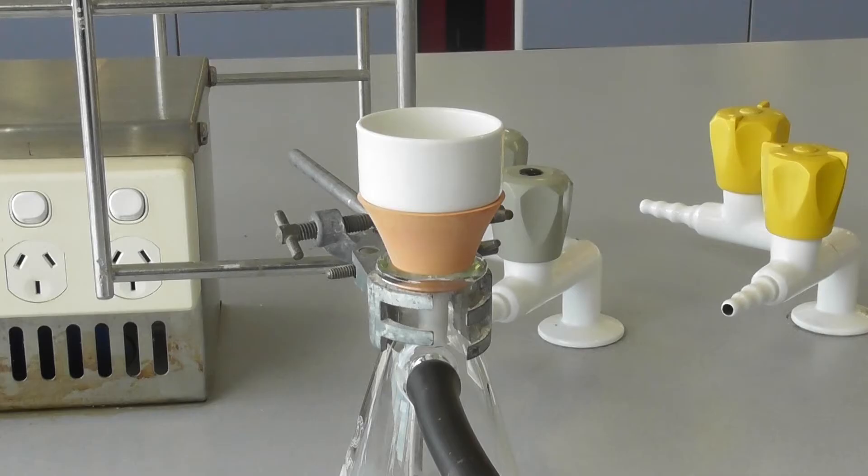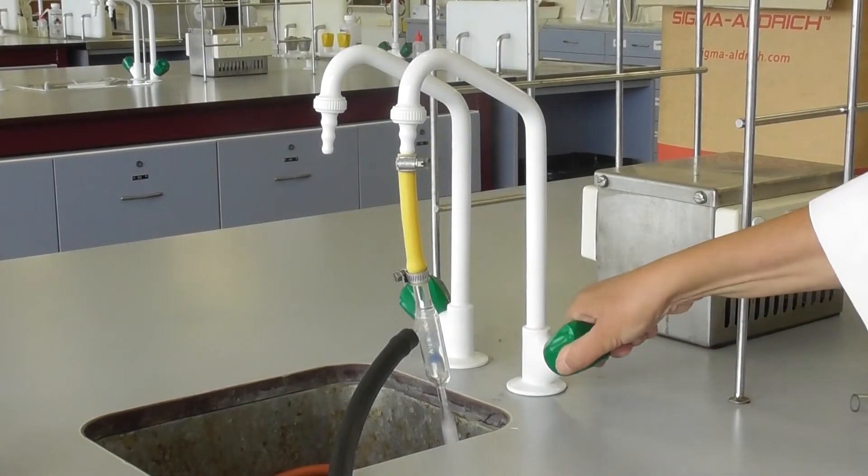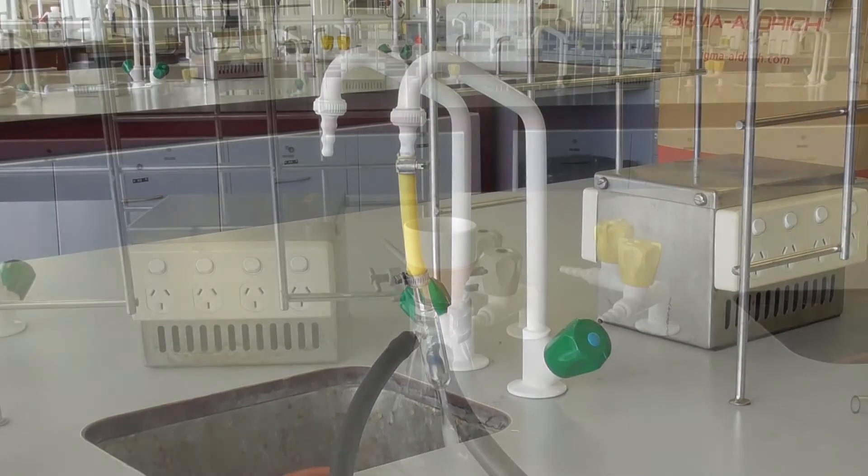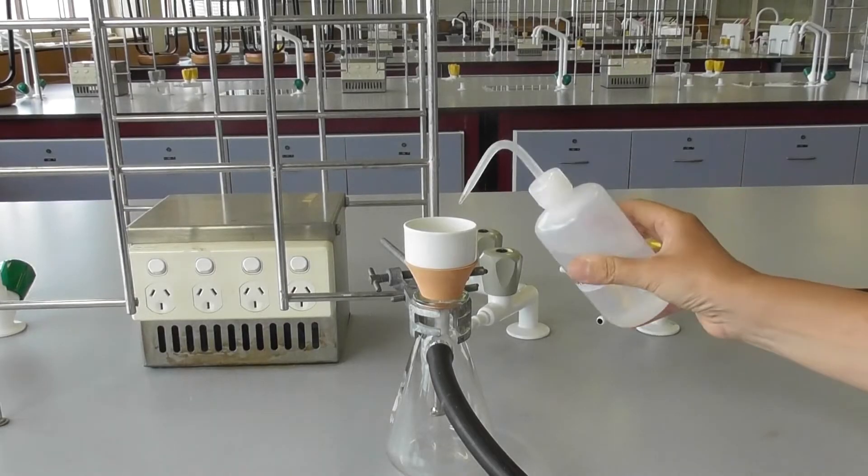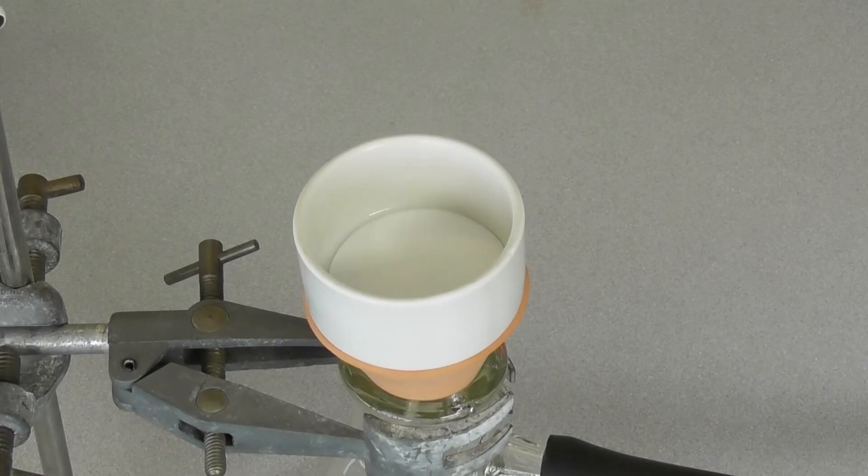Add the correct size filter paper. Turn on the vacuum. Wet the filter paper with the fluid you are filtering to ensure the filter paper sits in the correct position. Here we are using distilled water.